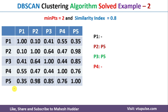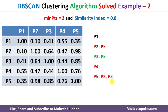Coming back to the last point, P5. For P5, P2 has a similarity index of 0.98 which is greater than 0.8, and P3 has a similarity index of 0.85 which is also greater than 0.8. P5 itself is 1.0. So for P5, the similar points are P2 and P3, along with P5 itself.